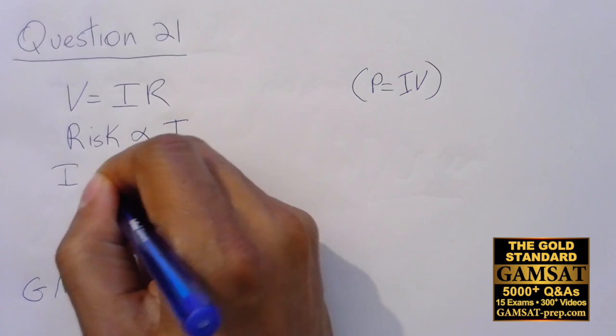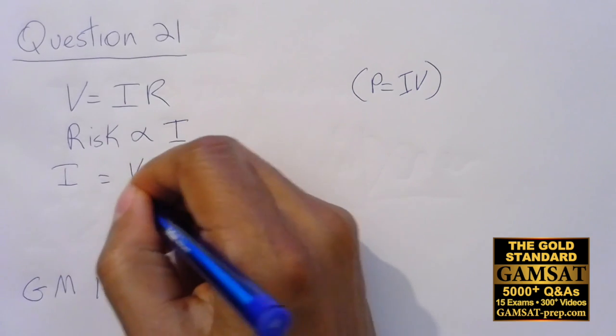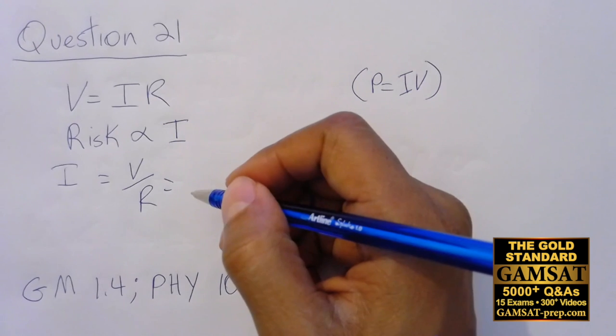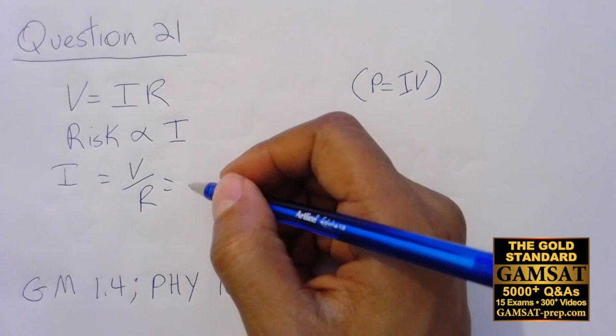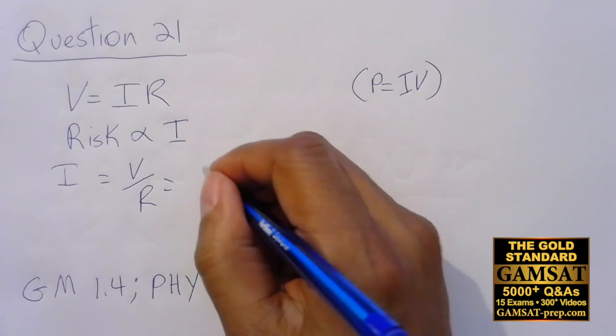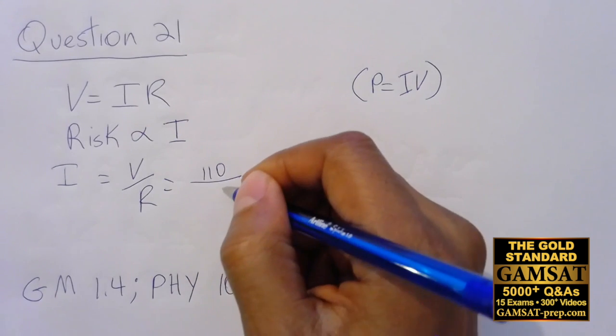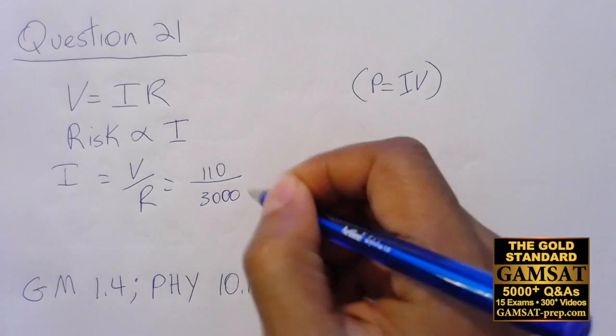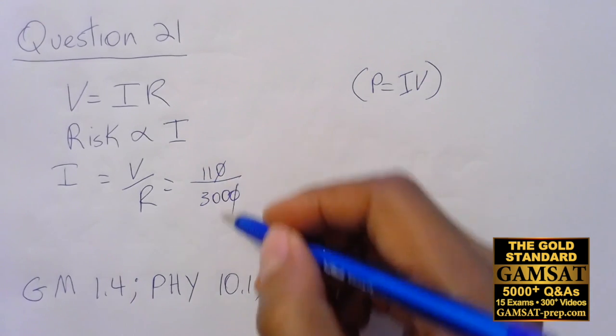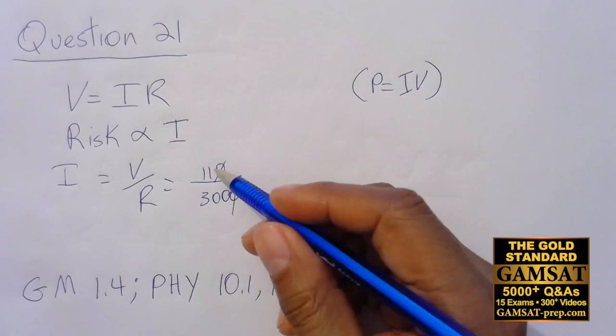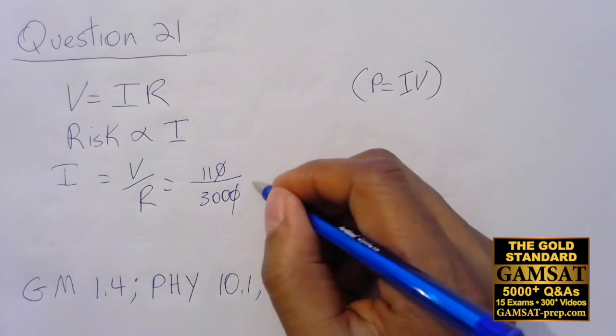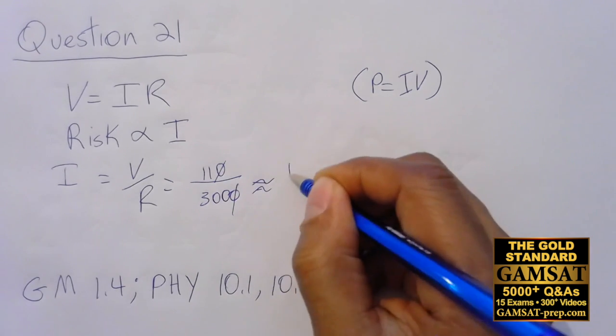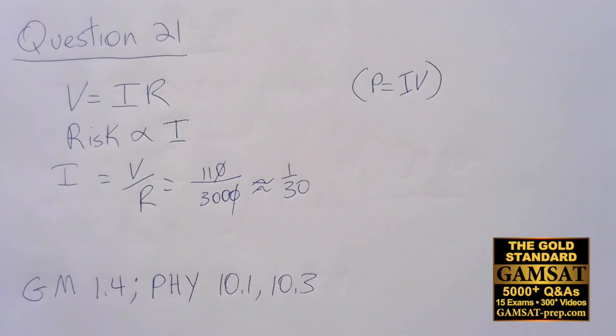I equals V over R. For the first circumstance, the voltage is 110 and the resistance is 3000 ohms. The zeros cancel; we have 11 over 300, or approximately 1 over 30.